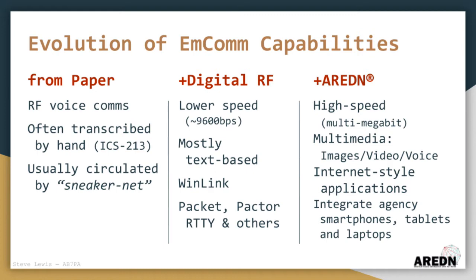Digital RF communication was mainly text-based and relatively slow, but very reliable. When AREDN became available, it added several features which the served agency staff were already familiar with in their normal operations.